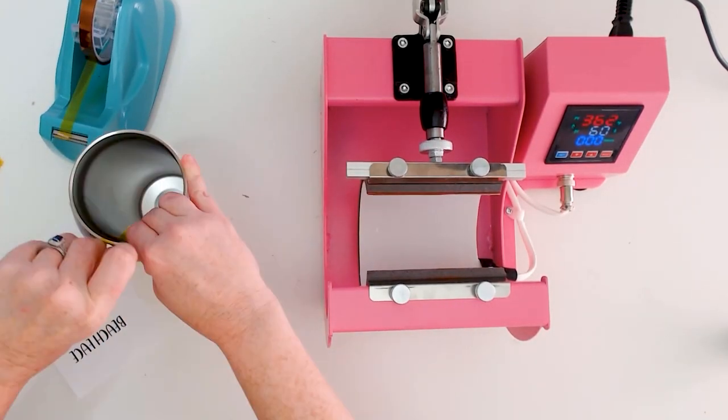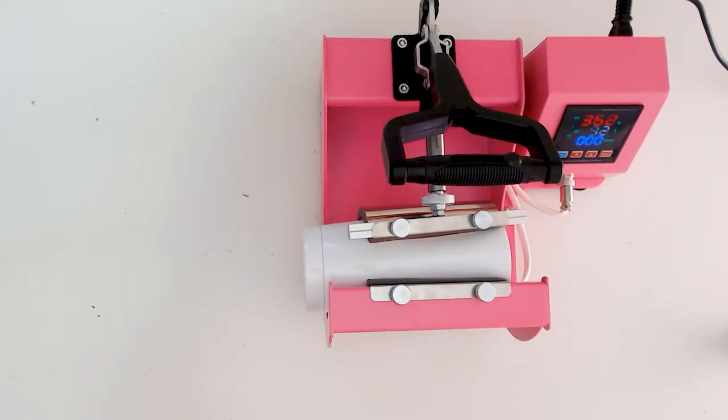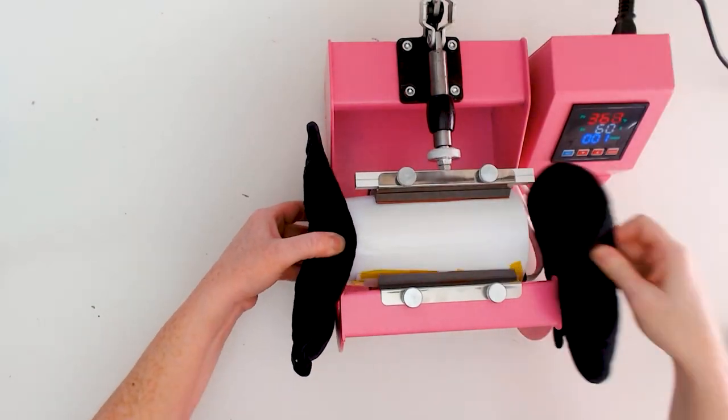Place the mug or tumbler in the middle of the heat pad and then pull down on the handle. Then press the red button on the side of the press to start the timer. The machine will beep when the timer is done and just press the red button to stop the timer.